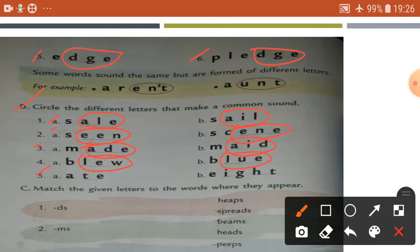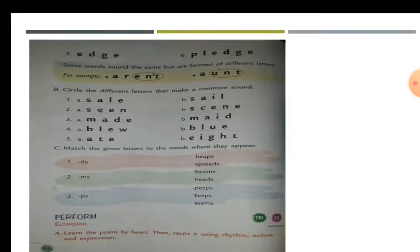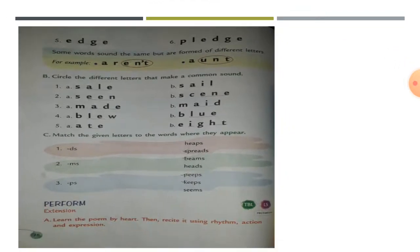Number five, eight, eight. So circle A-T-E, E-I-G-H-T, okay. So practice common sound, different letters that make a common sound.